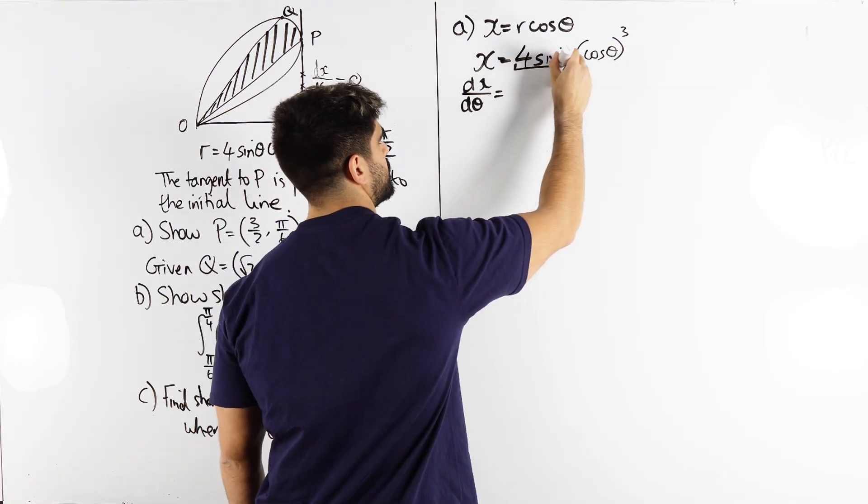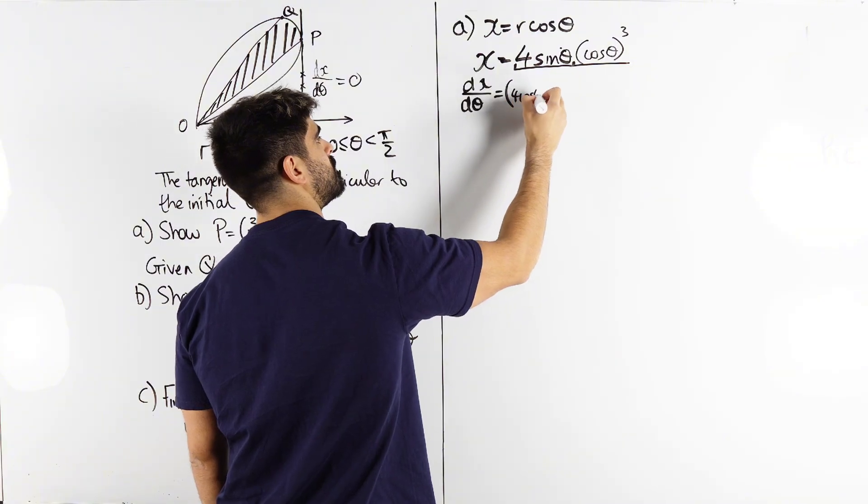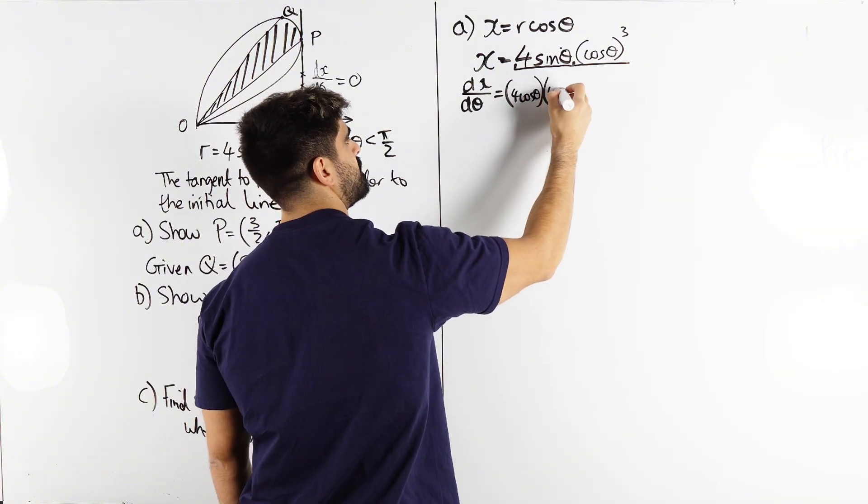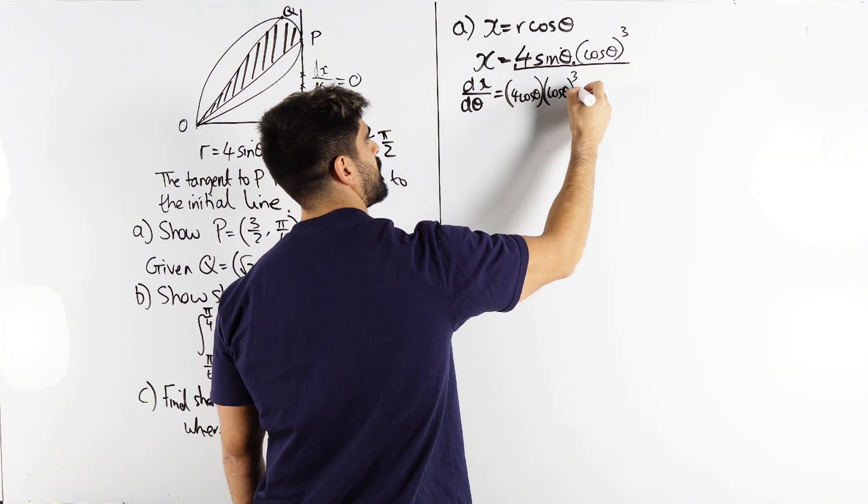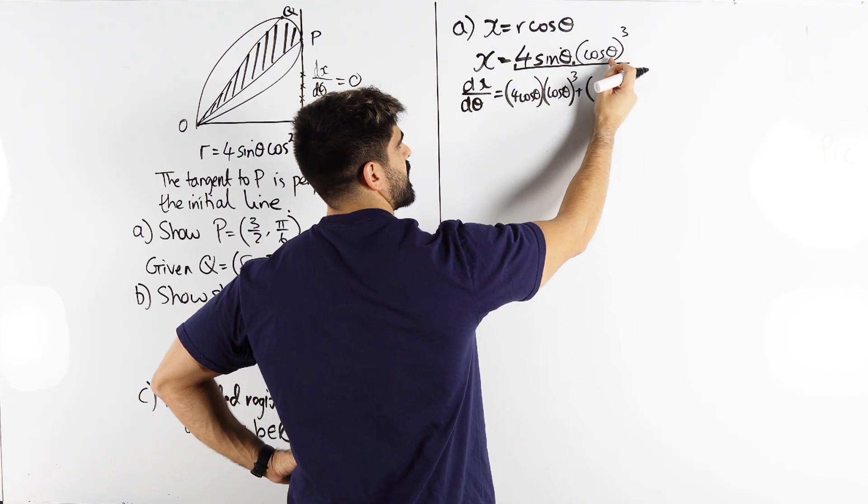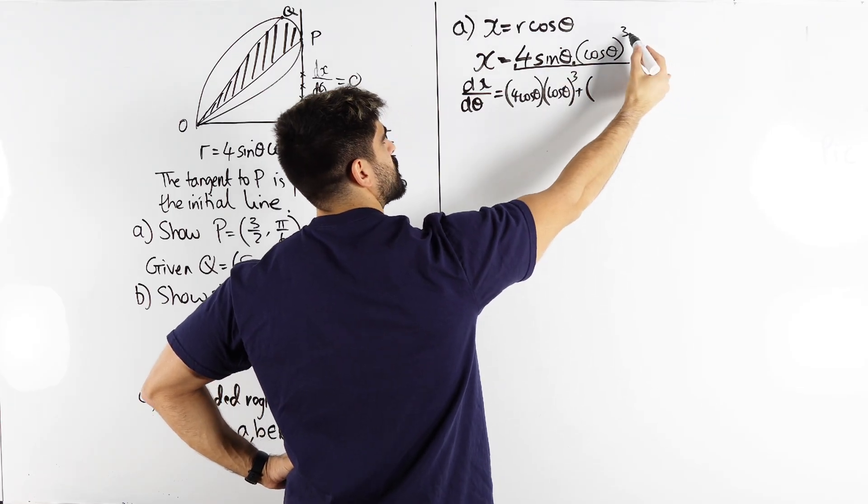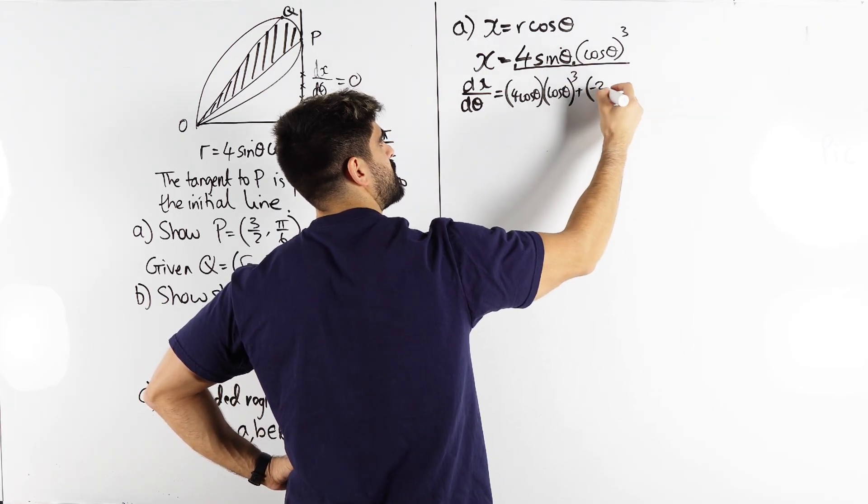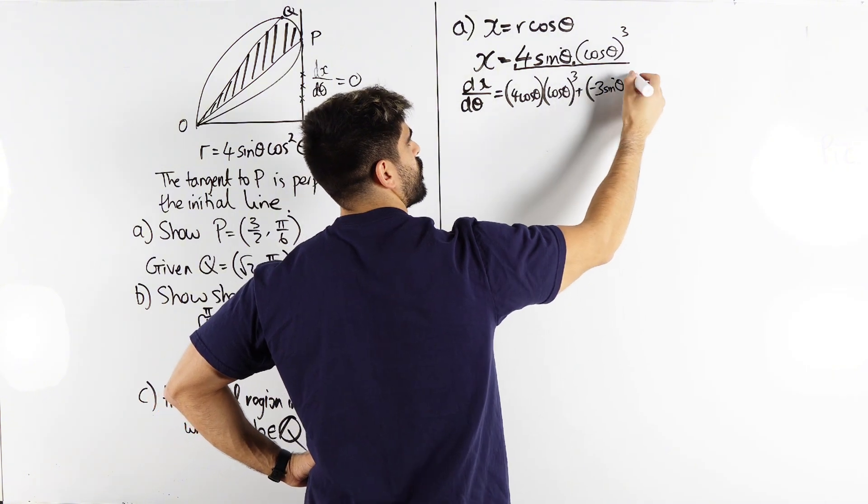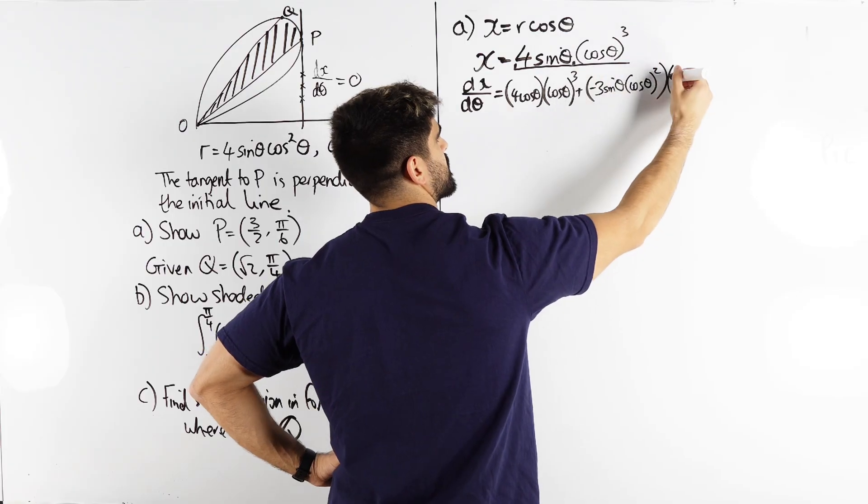This is product rule. Differentiate the first term times by the second term plus differentiate the second term. So there we differentiate the angle first is minus sine. Minus sine times so we bring down the power knock one off the power. So minus sine times three is minus three sine and then we knock one off the power times the first term.